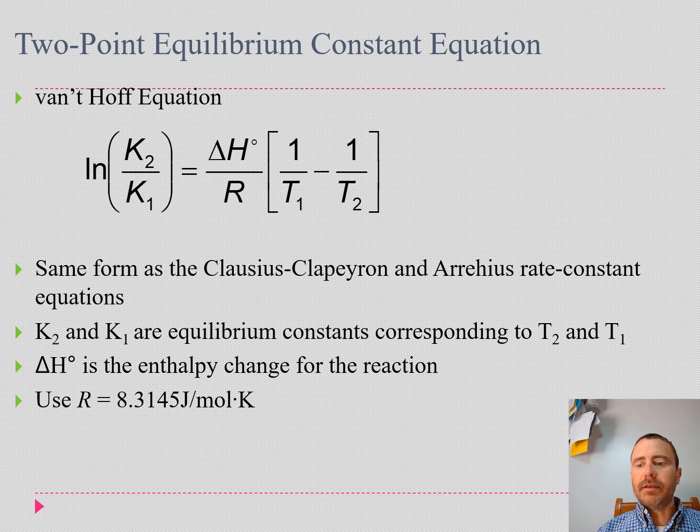Here we have our van't Hoff equation. This looks a lot like the Clausius-Clapeyron equation or the Arrhenius equation that we saw when we were doing our rate constants. This looks a lot like those, except that we are relating equilibrium constants, or K's, with our temperatures.